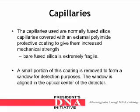Bare fused silica is extremely fragile. A small portion of this coating is removed to form a window for detection purposes. The window is aligned in the optical center of the detector.